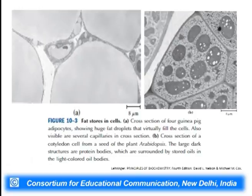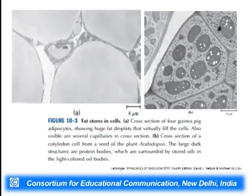A cross section of guinea pig adipose tissue shows large fat droplets which are triglycerides stored within these cells. A cross section of cotyledon cells from a seed of the plant Arabidopsis shows large droplet structures representing stored oils — triacylglycerols present within seeds. Whenever they are required, these are degraded by lipase enzymes, releasing fatty acids from the glycerol backbone and transferring them to sites where energy is needed.